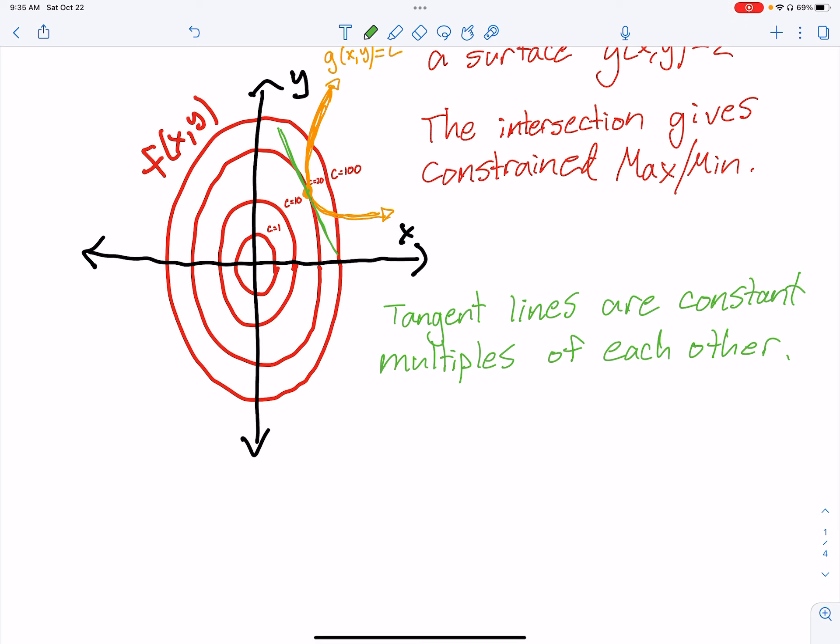Now, since the tangent lines, let's write this out. Tangent lines are constant multiples of each other, here, in this case. Well, if that's the case, and we learned this earlier, if the tangent lines are constant multiples or parallel, that's what that definition means, then we have that the normals of the level curves are scalar multiples, meaning they are parallel.